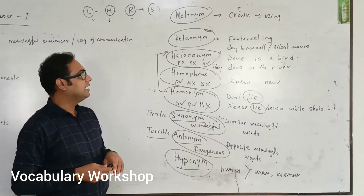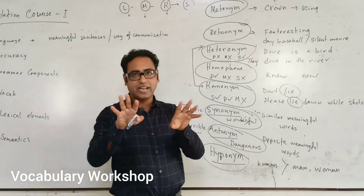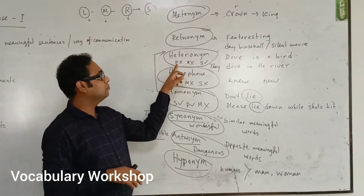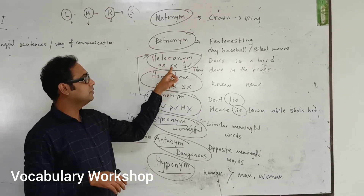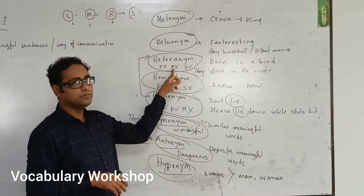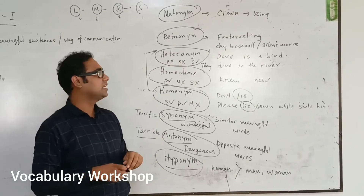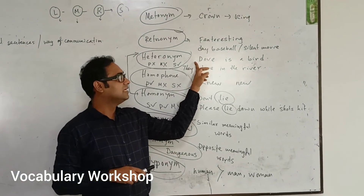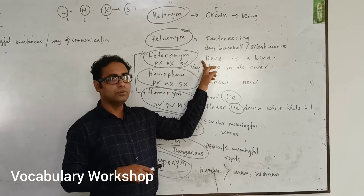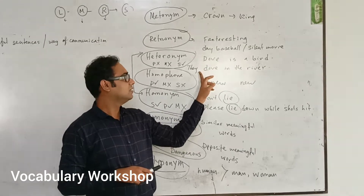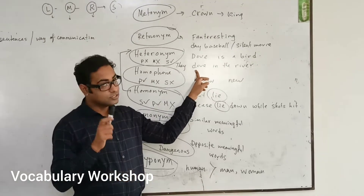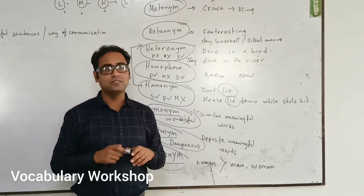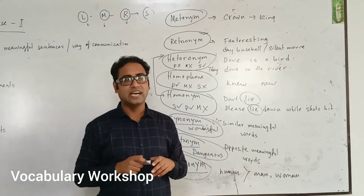The third one is heteronym. Heteronym is a kind of variety where the pronunciation will be different and the meaning will be different, but the spelling will be the same. For example, 'dove' — dove is a bird, but 'dove' is also the past tense of 'dive' in the river.